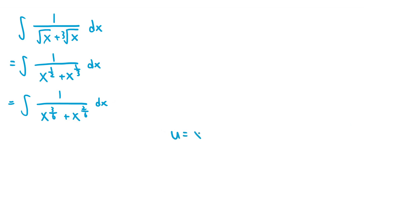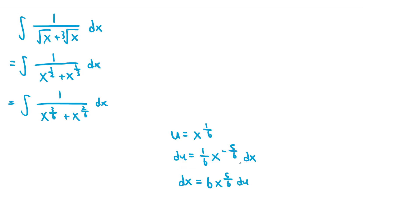So if we substitute u equals x to the power of 1/6, then du is equal to 1/6 times x to the power of negative 5/6, dx. If we isolate the dx, then dx is equal to 6x to the power of 5/6, du. This expression is just equal to 6u to the power of 5, du, since we defined u equals x to the power of 1/6, and x to the power of 5/6 equals u to the power of 5.